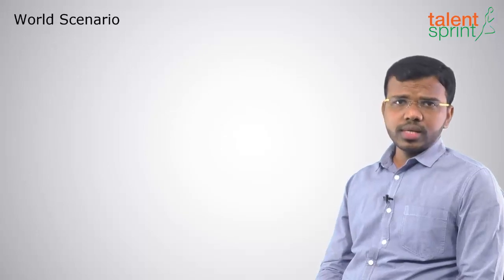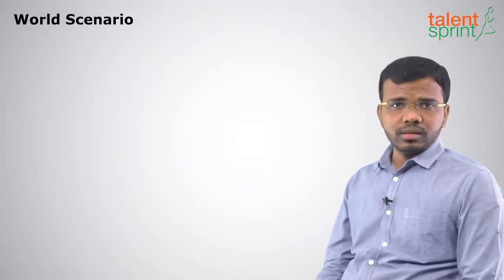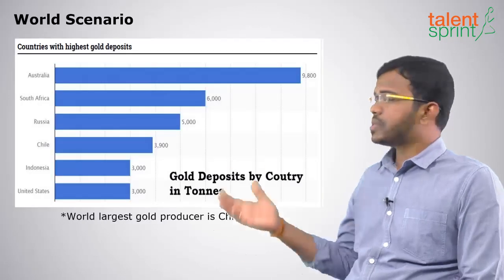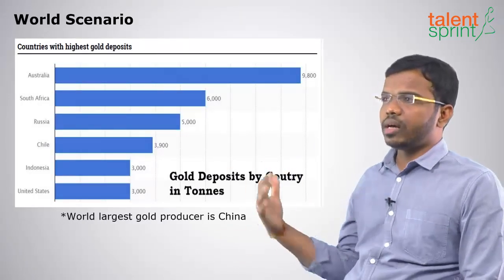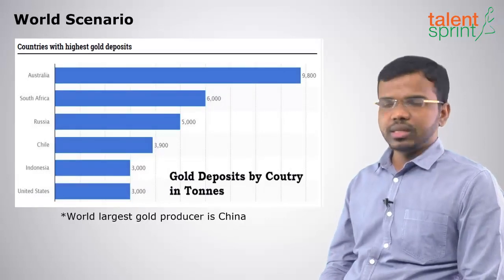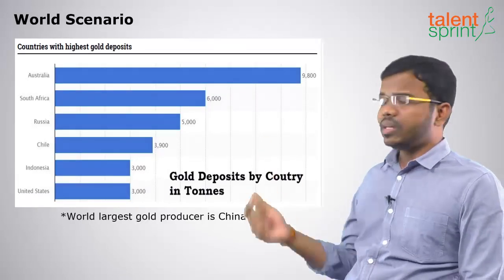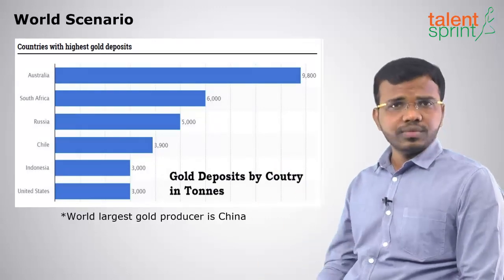Moving on to the world scenario — where gold extraction or gold reserves are present: the highest gold reserves are in Australia, next is South Africa, next is India. The largest gold-producing nation is China. So in terms of production it is China, and in terms of reserves it is Australia. This concludes the topic of the gold mineral. We shall meet in the next topics. Thank you.